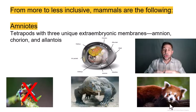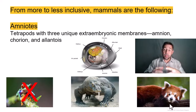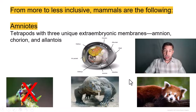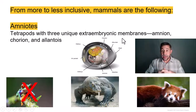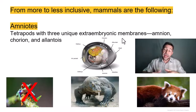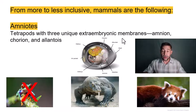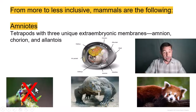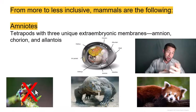The amniotes represent vertebrates that lay eggs impermeable to water and have three extra-embryonic membranes: the amnion, the chorion, and the allantois. This eliminates our amphibians, which have to lay their eggs in water and are thus tied to living in or near water or in very wet environments like the tropical rainforest — so our tree frog is now out.